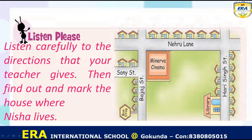Then the third house from your right is Nisha's house. So this is 1, 2, 3 — the third from your right hand. So this is the third house beside the library. So here is your friend's home, that is Nisha's house. Understood, dear friends?